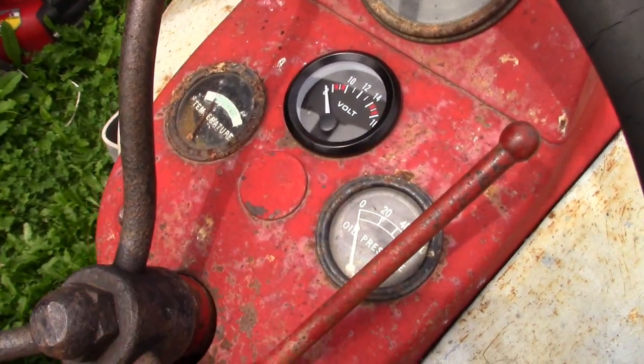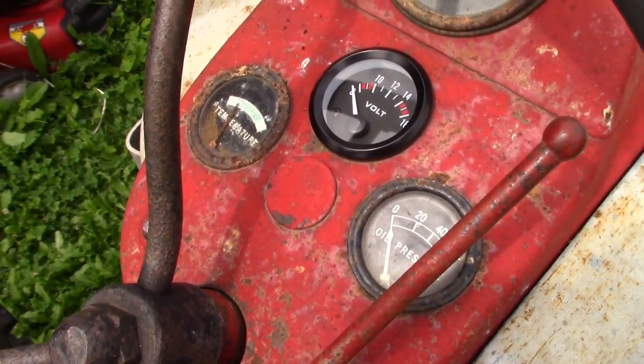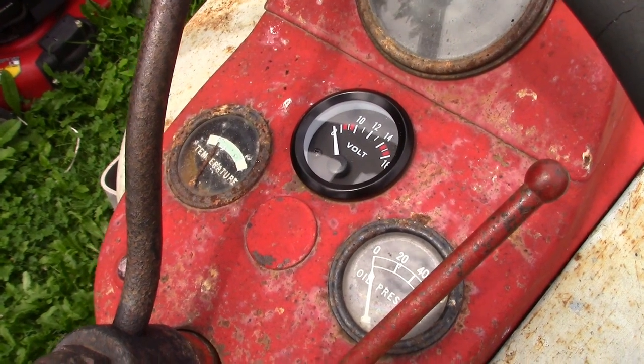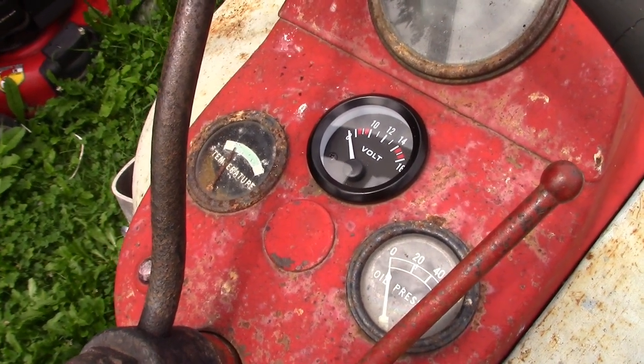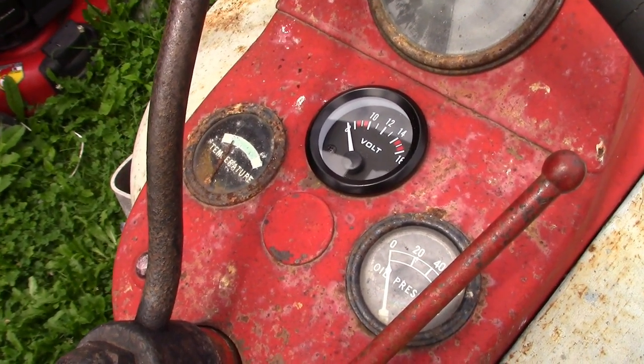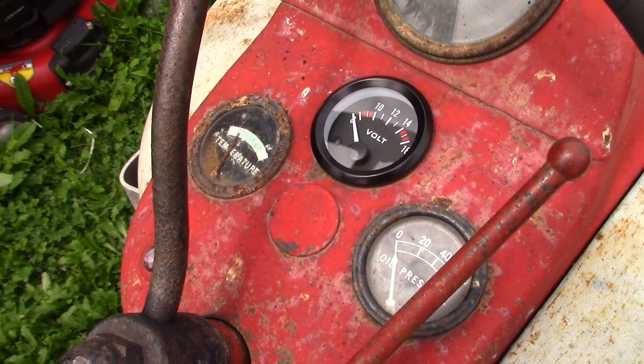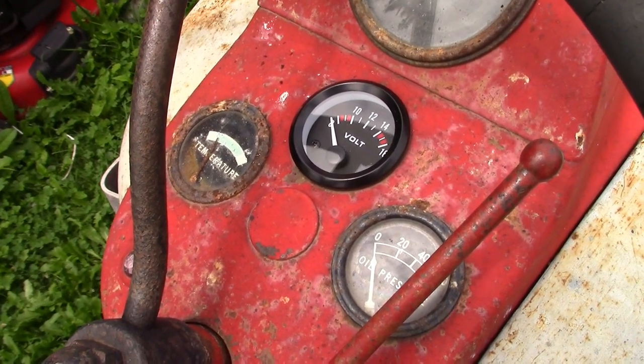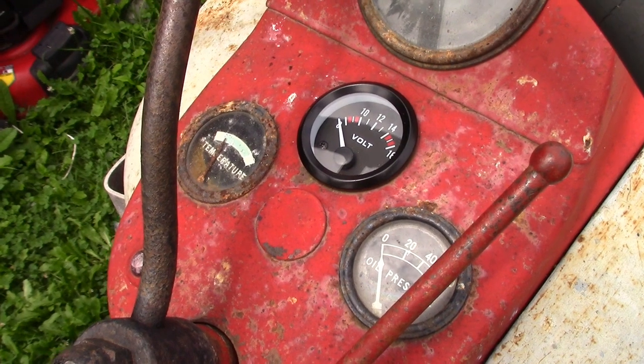The reason we're changing this out is the amp meter doesn't give you an indicator of what the battery condition is and the voltmeter will. The only thing that the amp meter does is show you whether it's charging or discharging the battery.